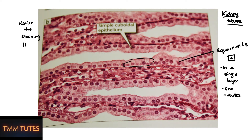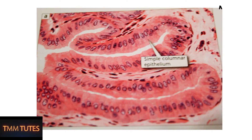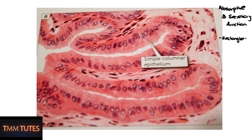Notice that this is a hematoxylin and eosin stain, or H&E. The hematoxylin is purple and stains the nucleus, and the eosin is a pinker color and stains the proteins in the cytoplasm. That applies to all the pictures.